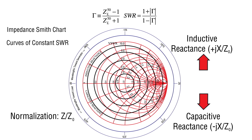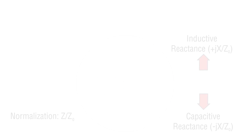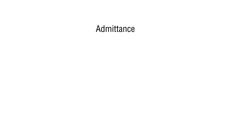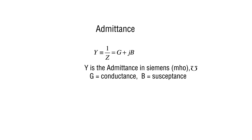So far we've been looking at the impedance version of the Smith chart. Now let's take a look at its dual, the admittance Smith chart. The admittance is the inverse of the impedance and is comprised of two parts: G is called the conductance, and B is the susceptance. Both are measured in a unit called Siemens.